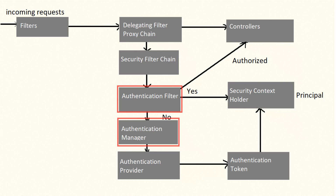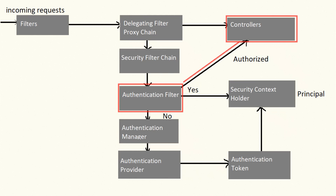Now the authentication filter knows the user has been logged in and is an authenticated user. It also checks whether the user is authorized to access that particular endpoint. If the currently authenticated user has access to that endpoint, it redirects the request to the corresponding controller and the request is served.